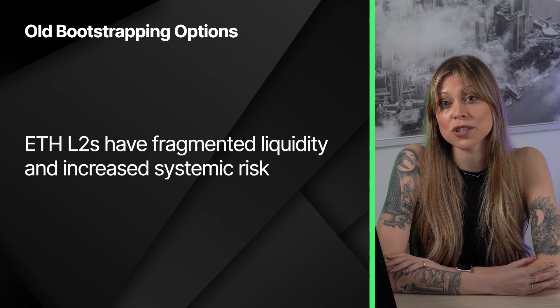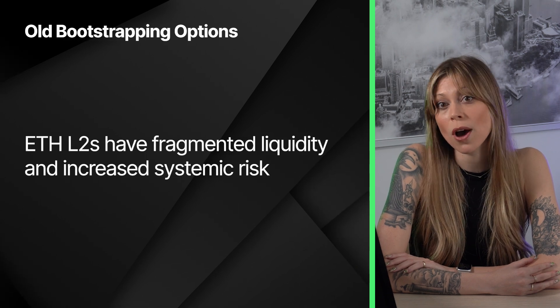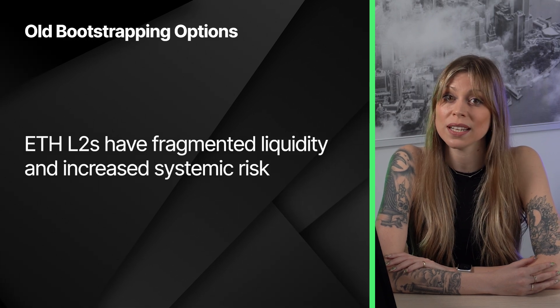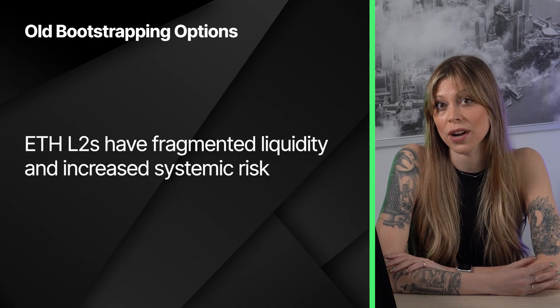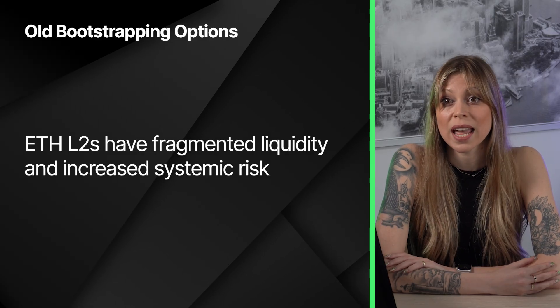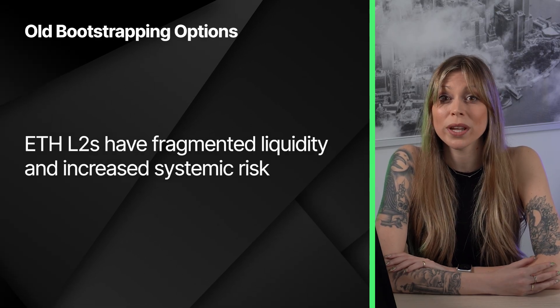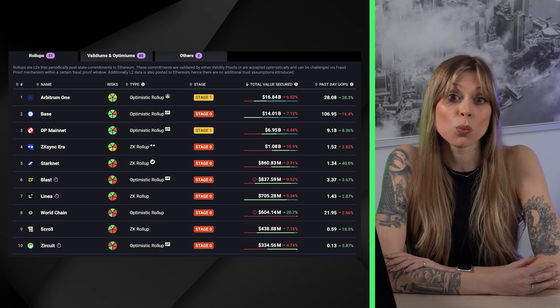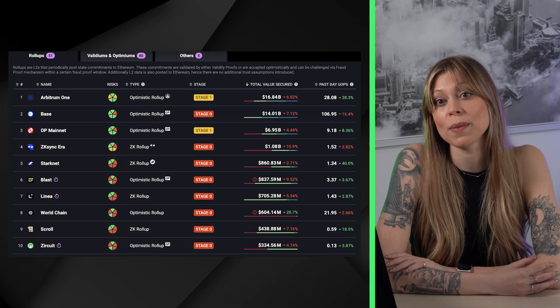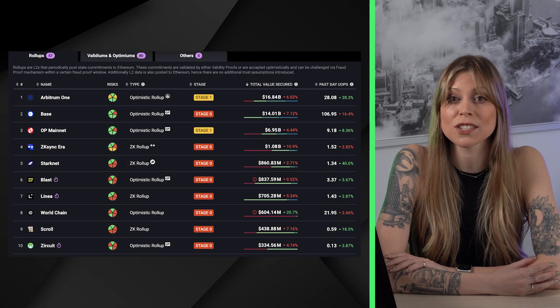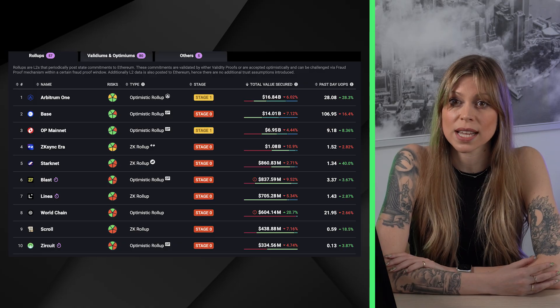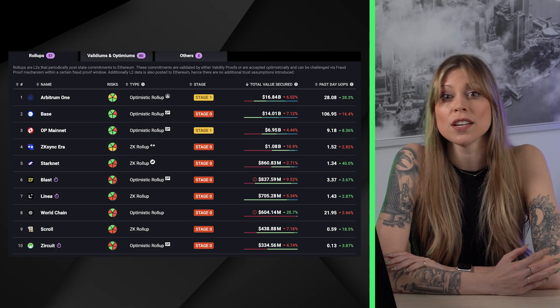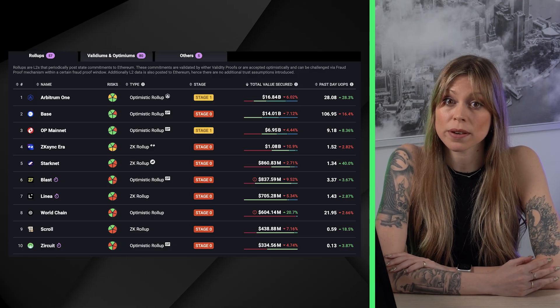In the case of Ethereum Layer 2s, that model has fragmented Ethereum liquidity, making the UX complicated for end users, and it has also led to a weaker economic model for ETH. Ethereum is currently working toward implementing based rollups, which are rollups that don't have their own validator set and post data and proofs directly to the Ethereum Layer 1. But is there a better way? SSV Network thinks so.